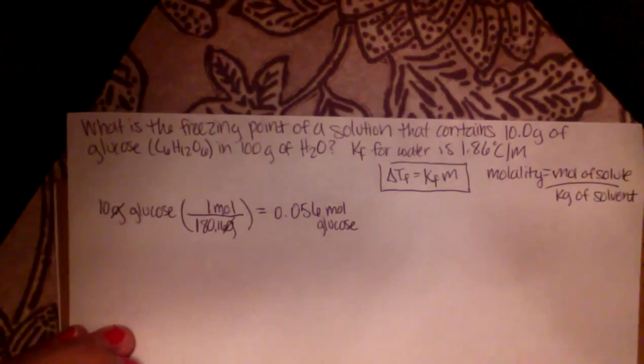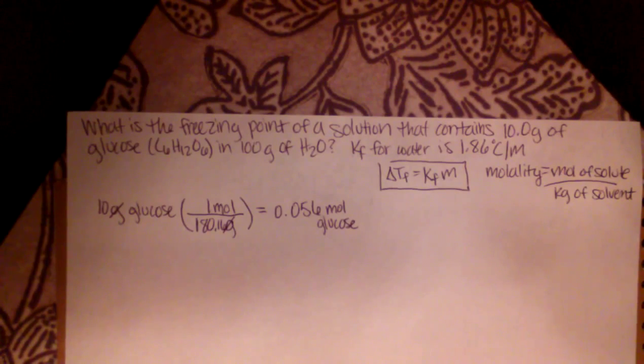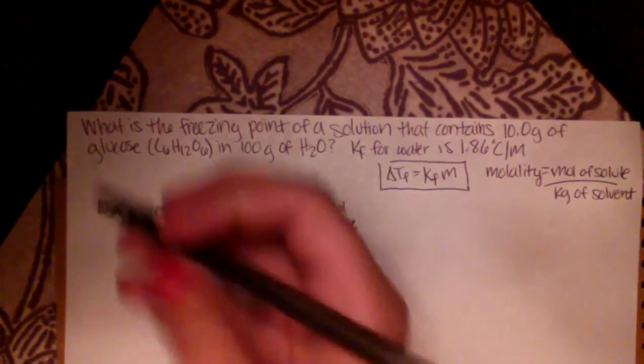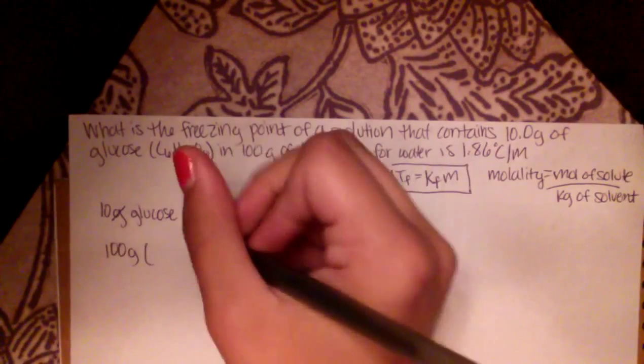So right now, we have the very top part of our molality problem. Now we need to figure out the kilograms of solvent. Well, we've already established that our solvent is water and we have 100 grams of water. However, we need that in kilograms, so we'll do a conversion.